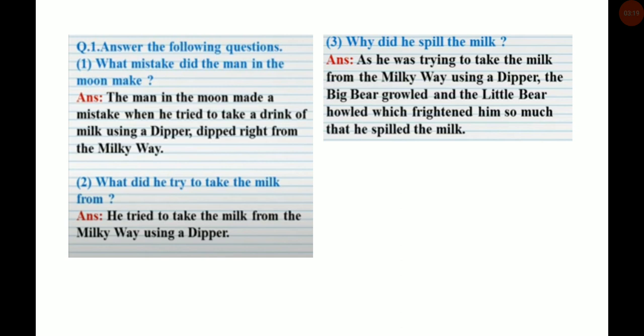What did he try to take the milk from? He tried to take the milk from the milky way using a dipper. Why did he spill the milk? As he was trying to take the milk from the milky way using a dipper, the Big Bear growled and the Little Bear howled which frightened him so much that he spilled the milk.